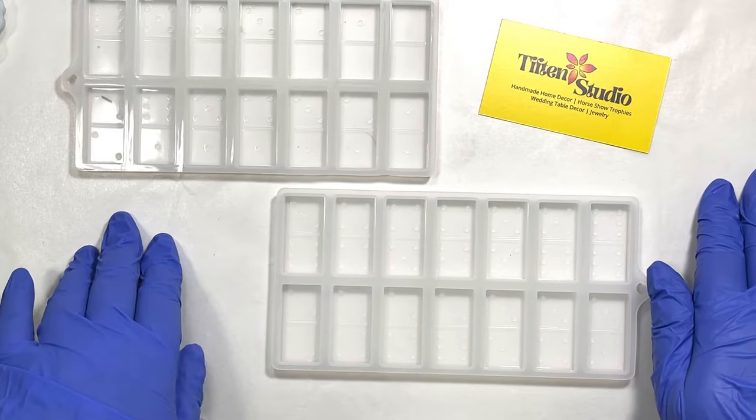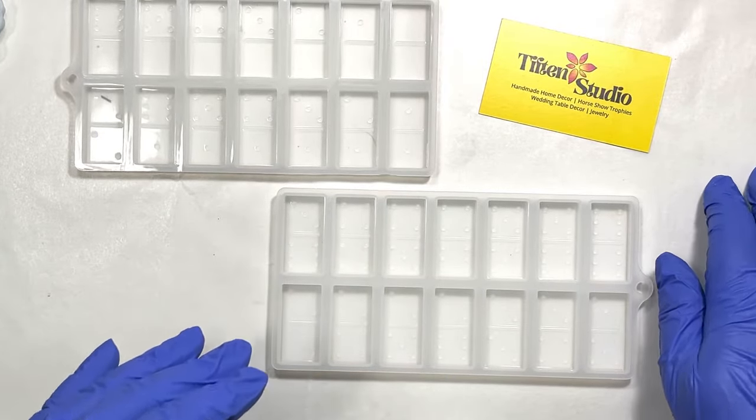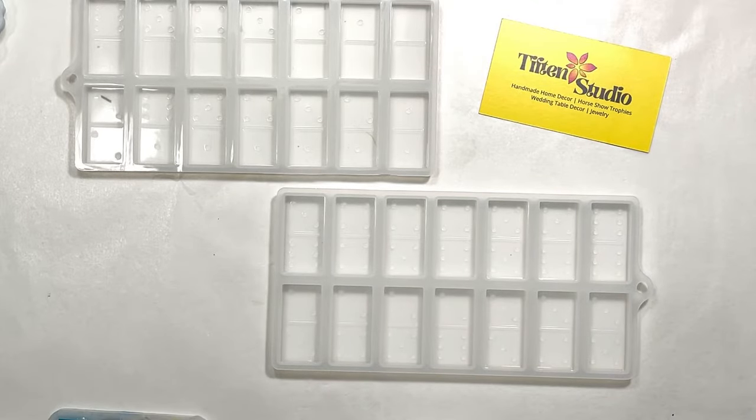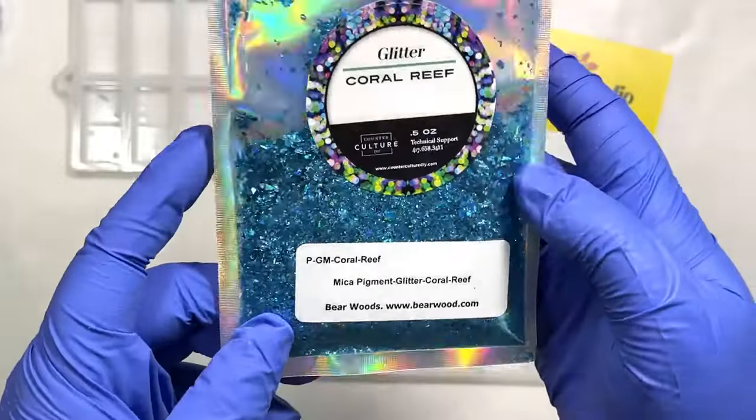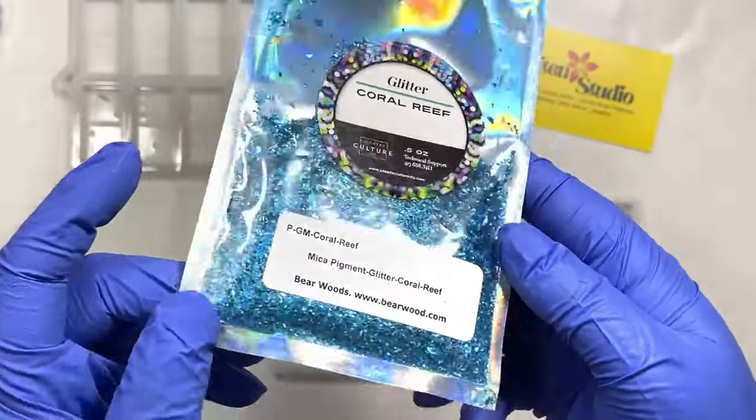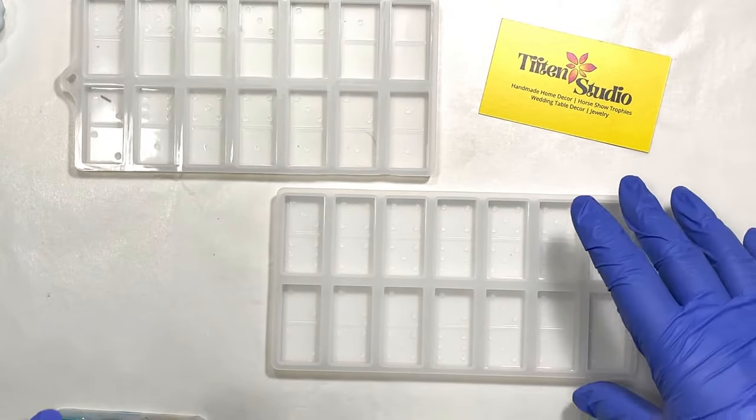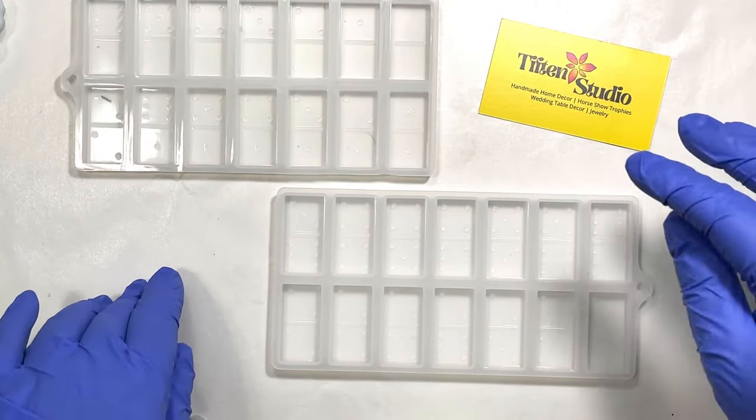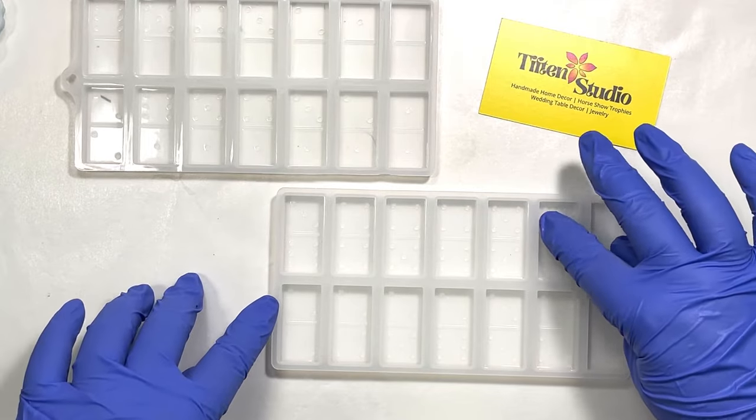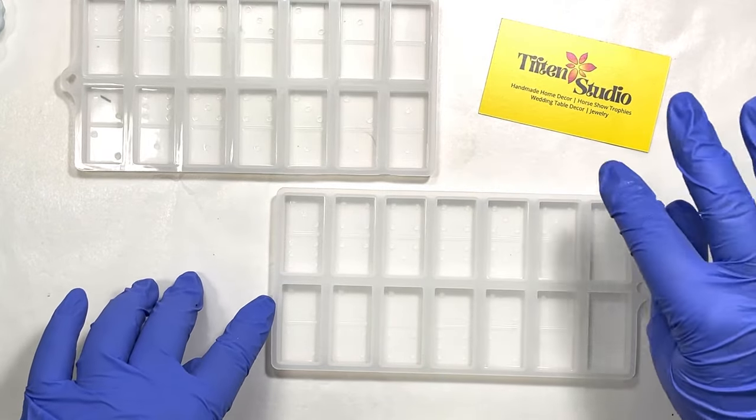Then I'm going to come back in and do a second layer using the Coral Reef glitter from Bear Woods for that second layer. And then after I demold, I'll show you how I put all the little dots and lines on everything.